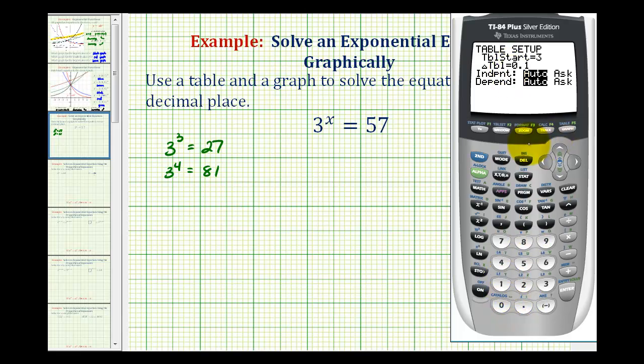Now if we go to the table by pressing second graph, we're going to scroll down and find the x value that produces the y value that's closest to 57. So let's go ahead and scroll down.